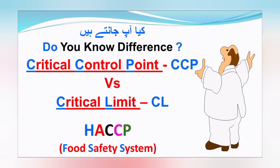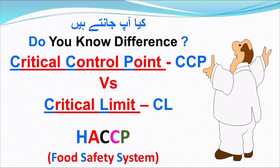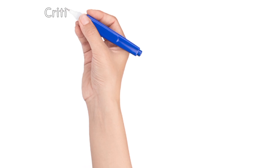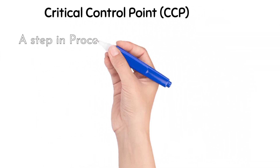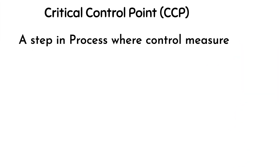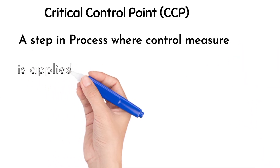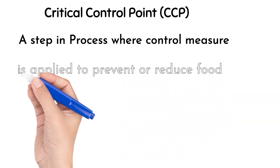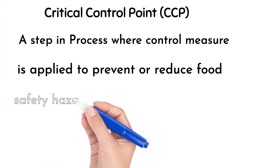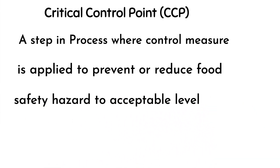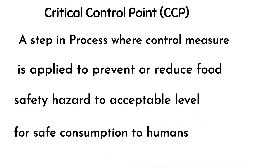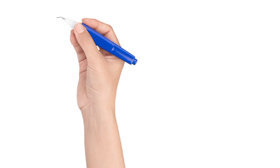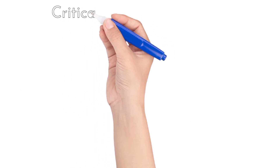Do you know the difference between the critical control point versus critical limit? Let's define the critical control point: a step in a process where a control measure is applied to prevent or reduce a food safety hazard to an acceptable level for safe consumption by humans. So CCP is a process step where a control measure is applied.